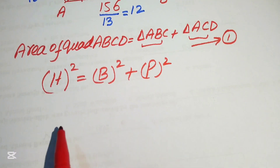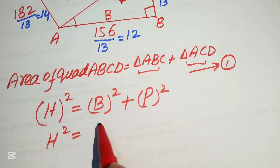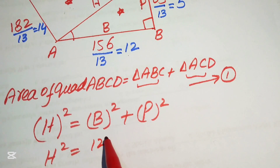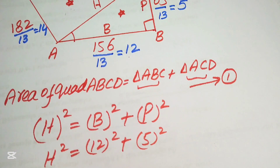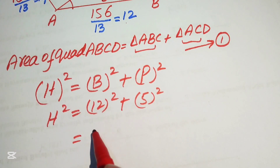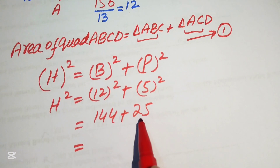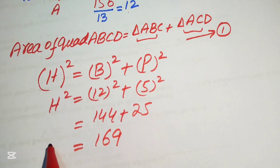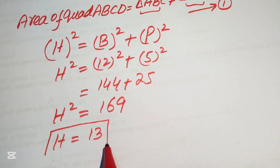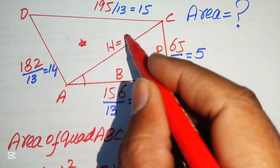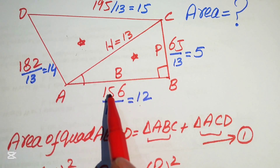The Pythagorean theorem states: h² = base² + perpendicular². In triangle ABC, the base is 12 and the perpendicular is 5. So h² = 12² + 5² = 144 + 25 = 169, which gives h = 13. We now know all three sides of triangle ABC: 12, 5, and 13.